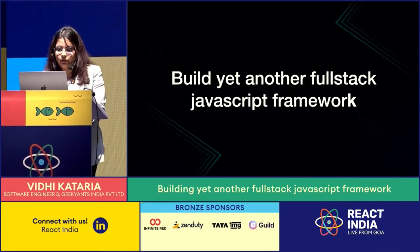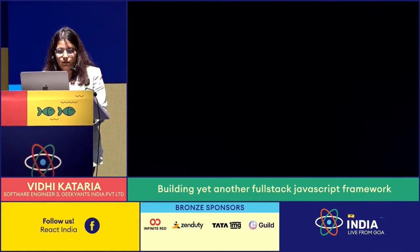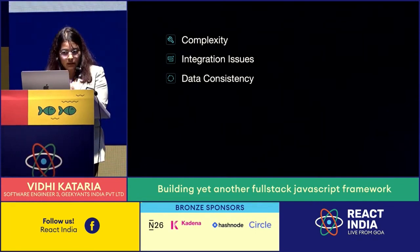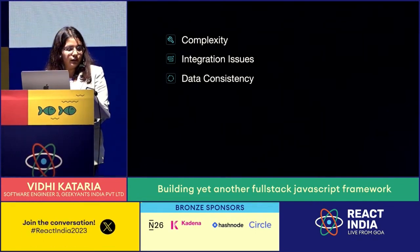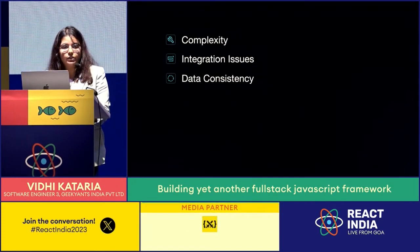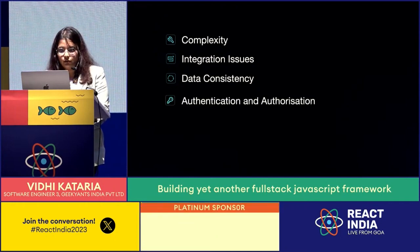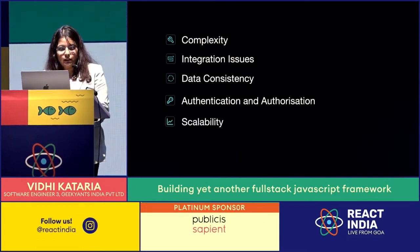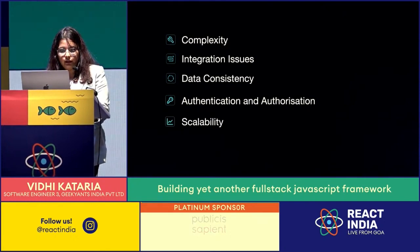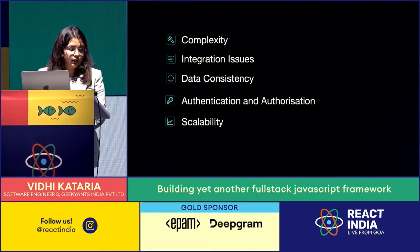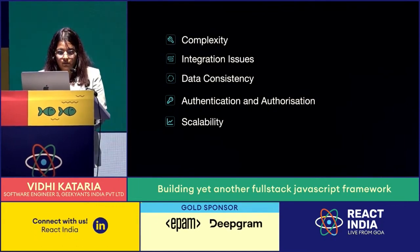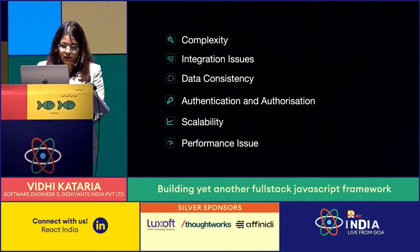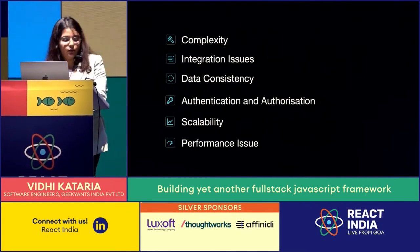Coming back to the issues while building a full-stack app — we already discussed complexity and integration issues. Next is data complexity: maintaining data consistency across different parts of the application and ensuring data is synchronized can be a challenge, especially in real-time applications. Next is authentication and authorization — implementing secure user authentication and authorization mechanisms can be complex. Next is scalability: planning and achieving scalability as the application grows is a significant challenge, including scaling both front-end and back-end components. Next is performance optimization: optimizing page load times, API response times, and database queries is crucial but can be complex.